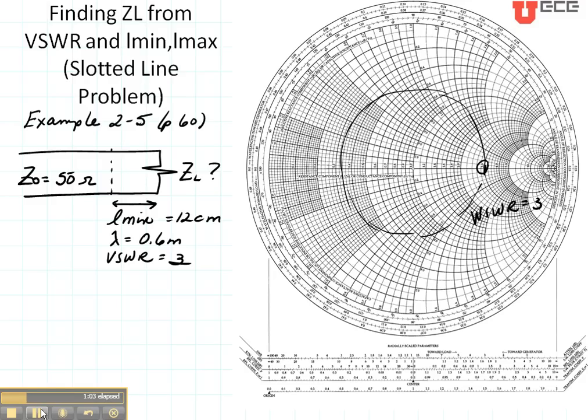Now let's find the location of the voltage minimum. This axis right here is the L-min axis. So this point right there is L-min. Let's see how far away that is from the load in terms of wavelengths because that's what we need for the Smith chart. So L-min in wavelengths is going to be 12 centimeters divided by the wavelength, which is 0.6 meters, or 0.2 wavelengths.